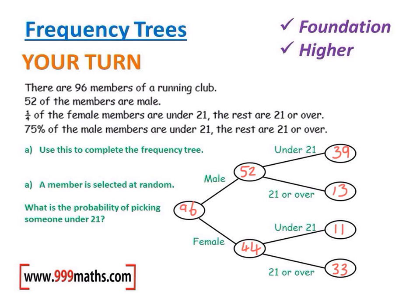Part b: a member is selected at random — what is the probability of picking somebody under 21? There are two parts of this tree where people are under 21: the males and the females. It doesn't specify male or female, so altogether there are 50 under-21s out of 96 people. That 50 comes from adding the 39 male under-21s and the 11 female under-21s.